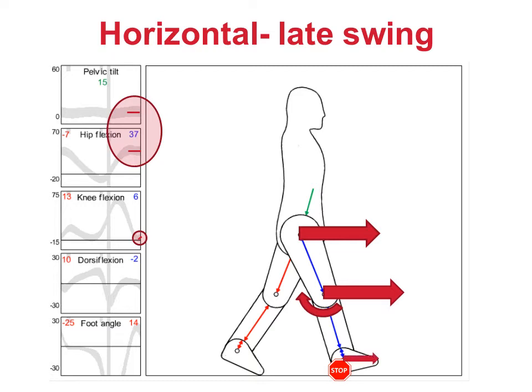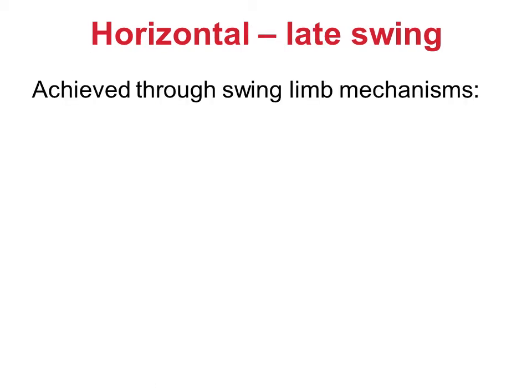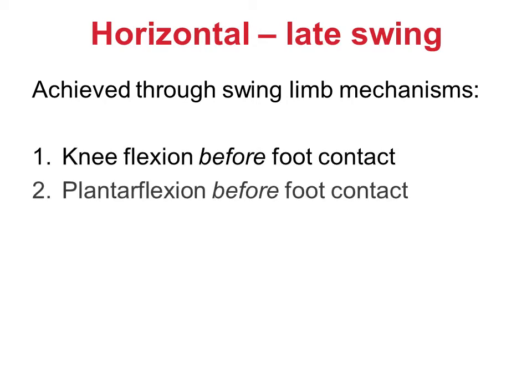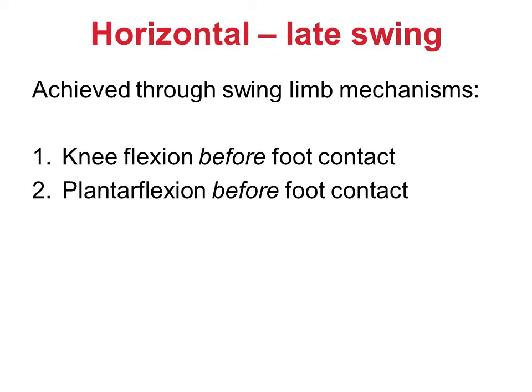Looking at the graphs again, you can see that plantar flexion also starts in late swing. Just as with the knee, the effect of ankle plantar flexion is to move the heel back with respect to the ankle, which will further reduce the velocity of the part of the plantar surface of the heel that first makes contact with the ground. So in summary, a gentle contact at the heel is made by both knee flexion and ankle plantar flexion occurring before foot contact.